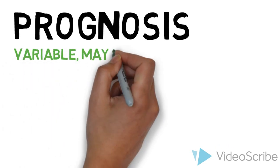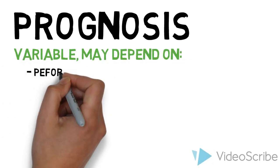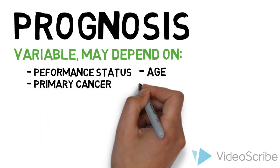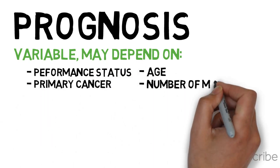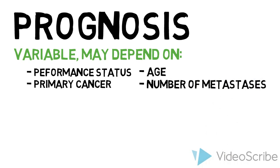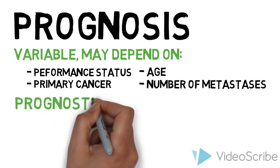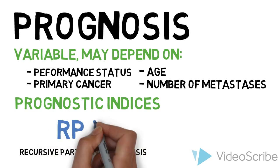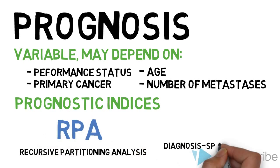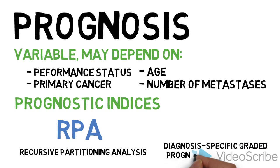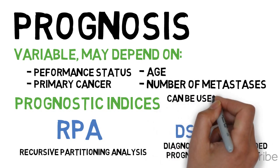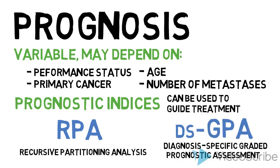Prognosis for patients with brain metastases is variable and depends on a number of factors, such as the patient's performance status, the patient's primary cancer, the patient's age, or the number of intracranial and extracranial metastases. Prognostic indices, such as the recursive partitioning analysis (RPA) and the diagnosis-specific graded prognostic assessment (DSGPA), can be used to estimate prognosis and guide treatment.